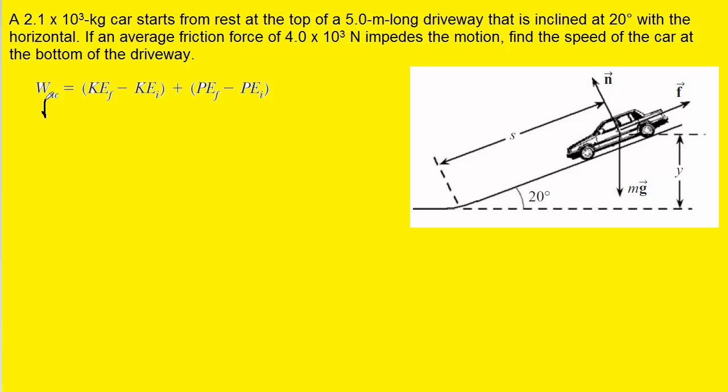And we know from this chapter that the work done by the force of friction would be the force of friction multiplied by the distance that the car travels, which we have labeled s in the diagram, multiplied by the cosine of an angle. And we want to talk about what that angle is.